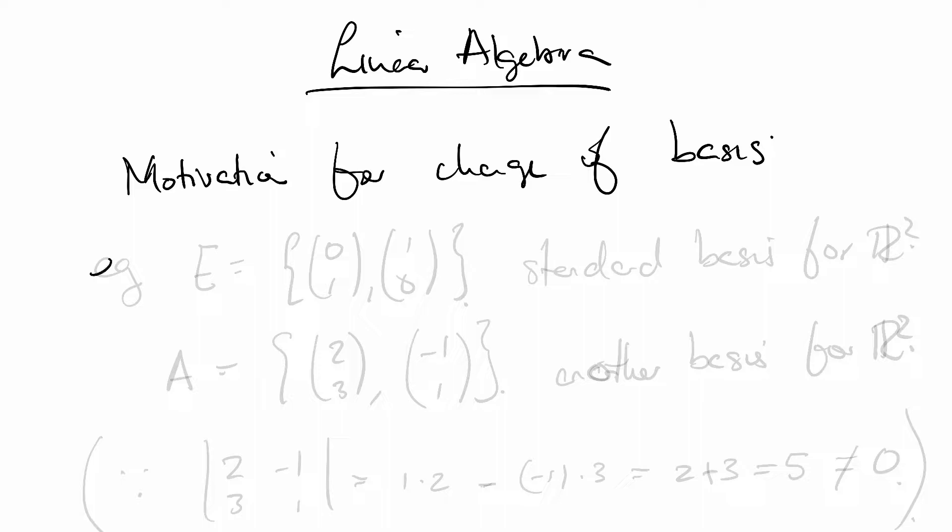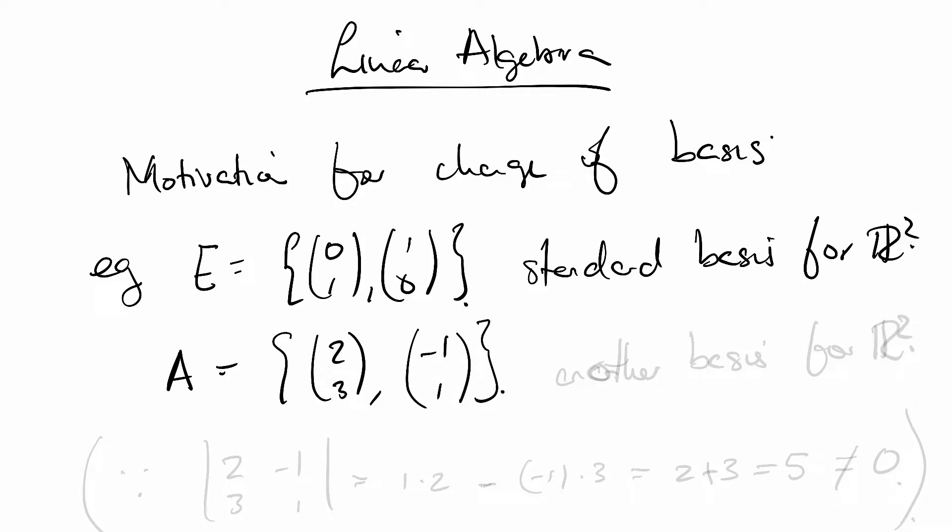For example, by now we know that vector spaces have multiple bases. The question is why is that a useful thing to know? For example, we have the set (1,0), (0,1). This is the standard basis for R². But we also know that this set, consisting of the vectors (2,3) and (-1,1), also forms a basis.